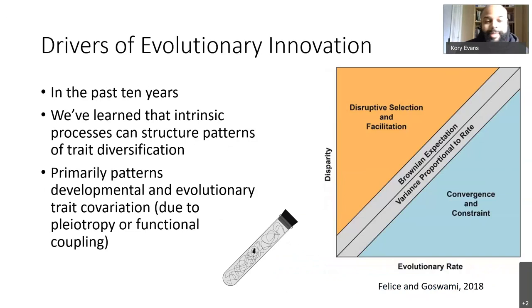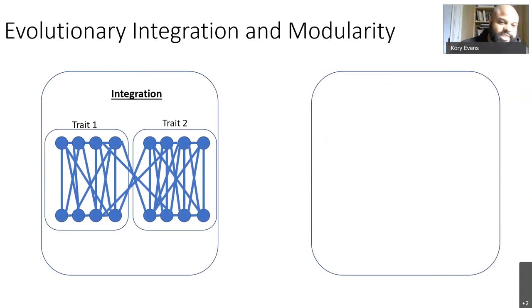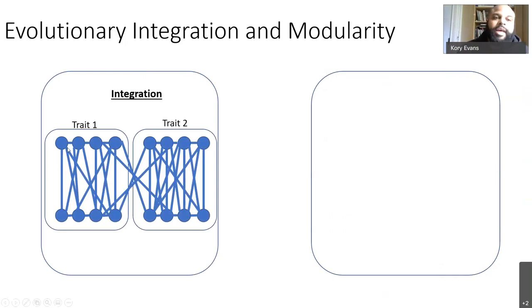Over the past ten years, we've learned quite a bit about intrinsic or developmental properties that can influence patterns of trait diversification and evolutionary innovation. The processes we'll be talking about today are differences in developmental trait covariation, typically due to pleiotropy or functional coupling. I'll describe two important cases of trait covariation generally, and then explain their macroevolutionary consequences. First, let's talk about integration: integration occurs where there's a high degree of covariation between traits, such that if one trait changes, the other changes as well — typically due to pleiotropy, a shared underlying genetic signaling network.